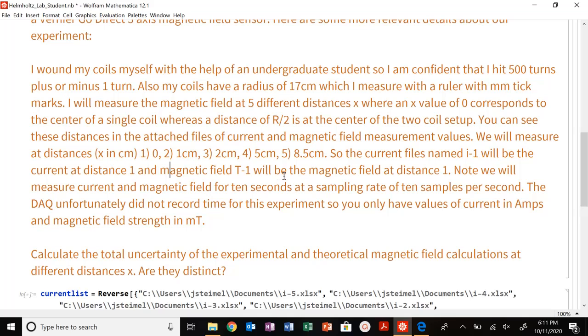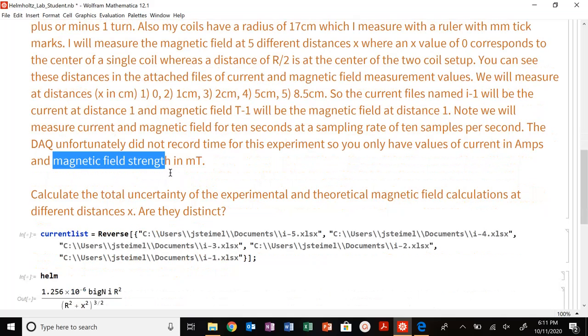We are going to measure the current magnetic field for 10 seconds, sampling rate of 10 samples per second. The DAQ unfortunately this time did not record time. So you'll only have values of current in amps. For the magnetic field strength, they are in milliTeslas already. But I would convert to Teslas.